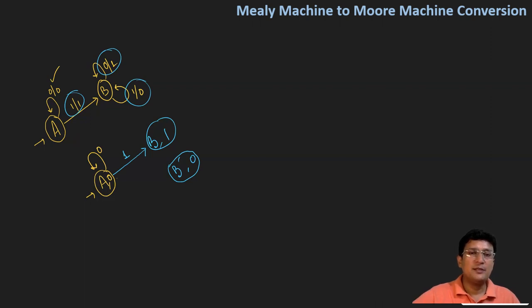You can see there are self-loops here. If I am at state B and take input 0, I remain at state B and output 1 is produced. I will mark this transition accordingly.